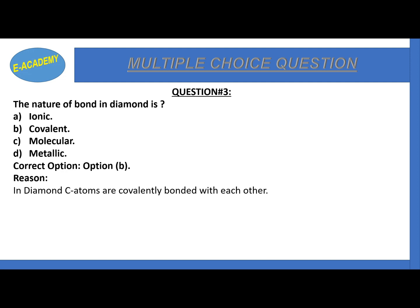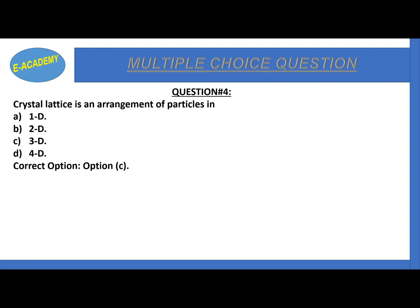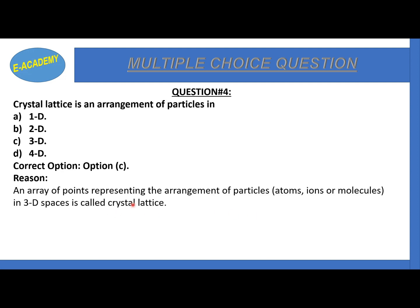Question number 4: Crystal lattice is an arrangement of particles in 1D, 2D, 3D, or 4D? The correct option is C. The arrangement of points in a 3D space is called crystal lattice.